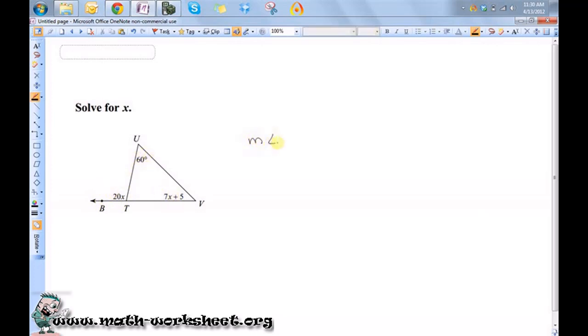So the measure of angle U plus the measure of angle V is equal to the measure of angle UTB. So I'm just going to substitute the various expressions in.